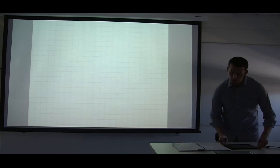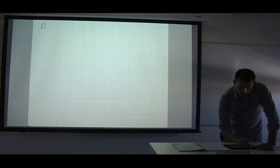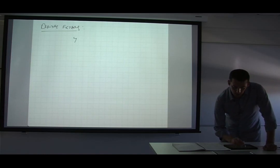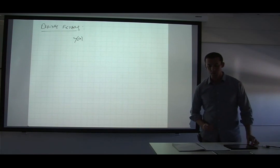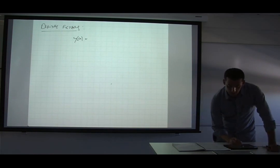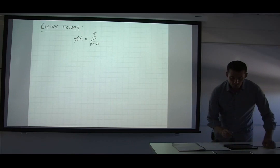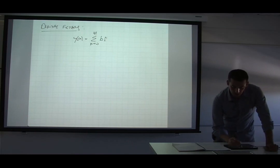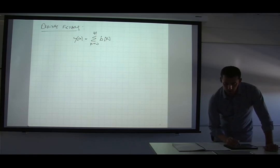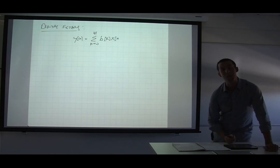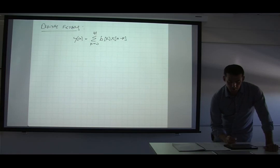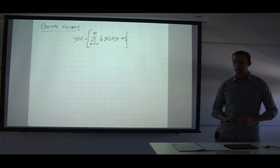The definition of a digital filter. We have an output y(n), where n is the sample index. The difference equation is a weighted sum from k=0 to M of the b(k) weights multiplied by the current input x(n) and its previous values. If this was the only term, that would be an FIR filter — a finite impulse response filter.